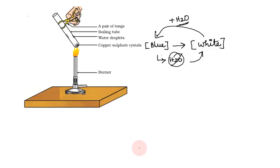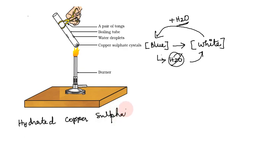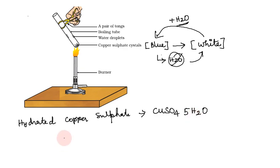So hydrated copper sulfate is the chemical formula CuSO4·5H2O. Adding 5 water molecules gives hydrated copper sulfate. From this activity we understand what water of crystallization is.